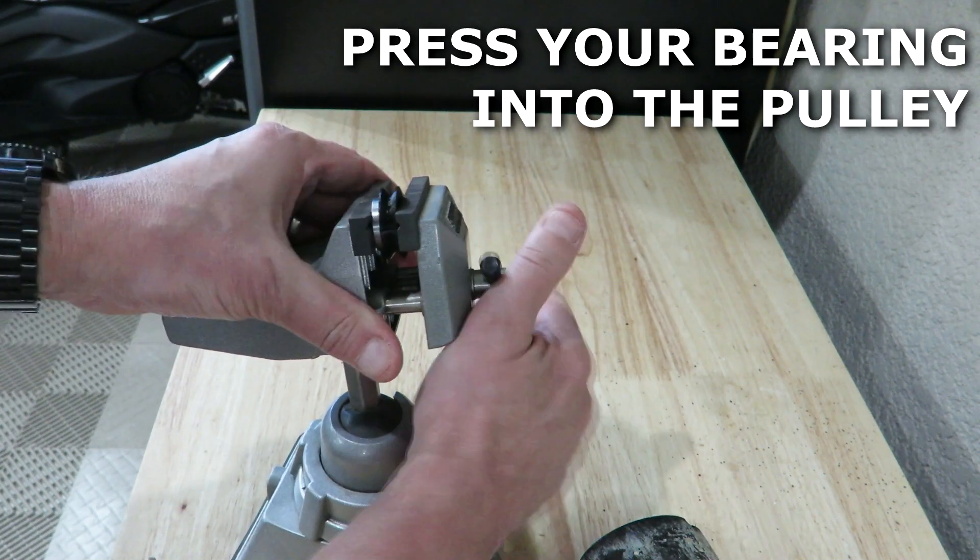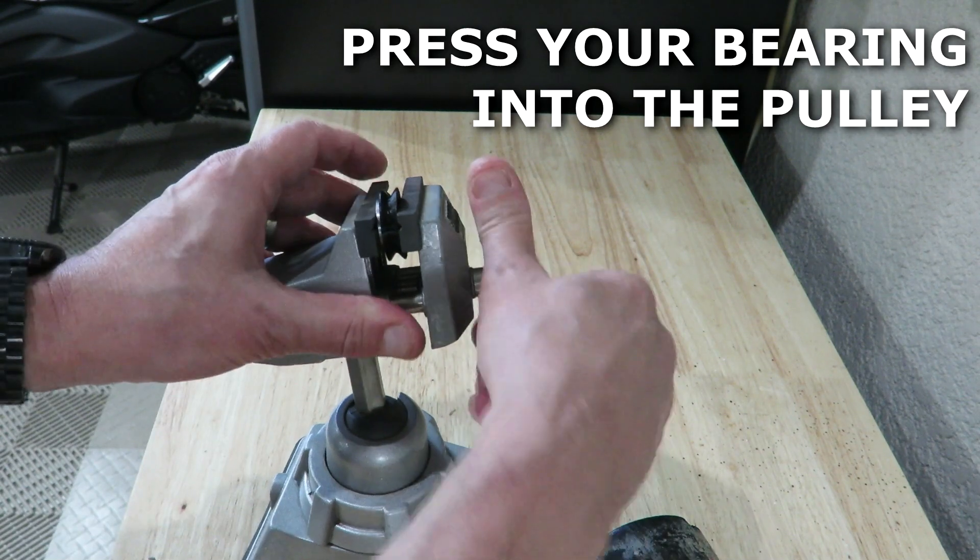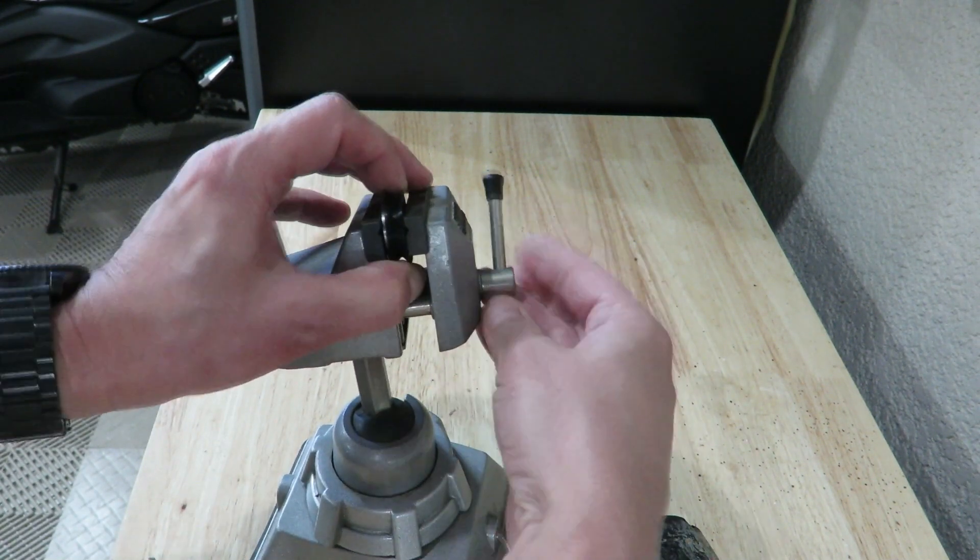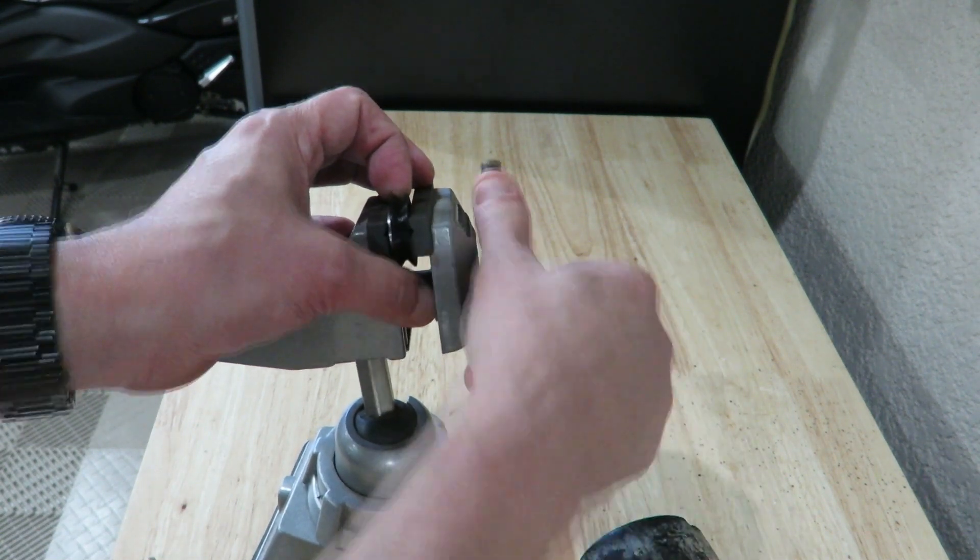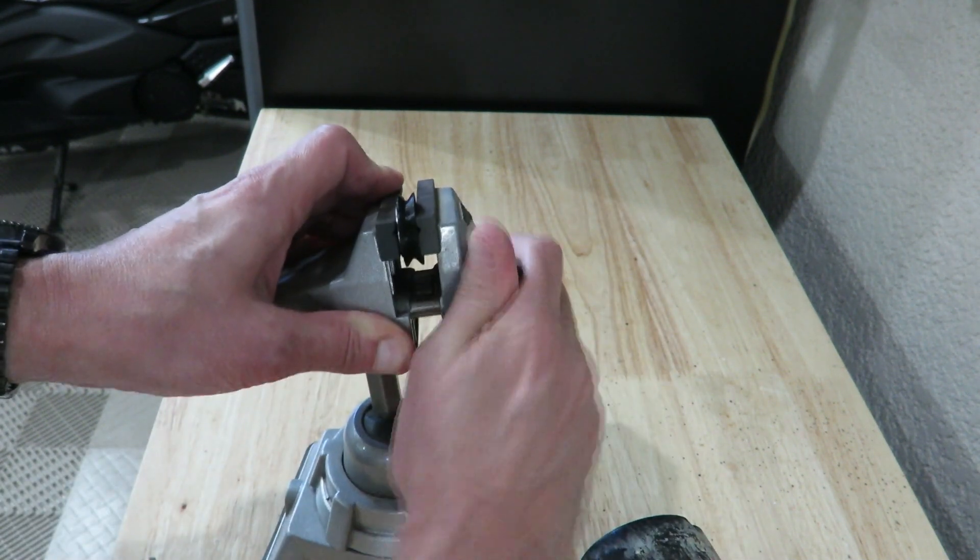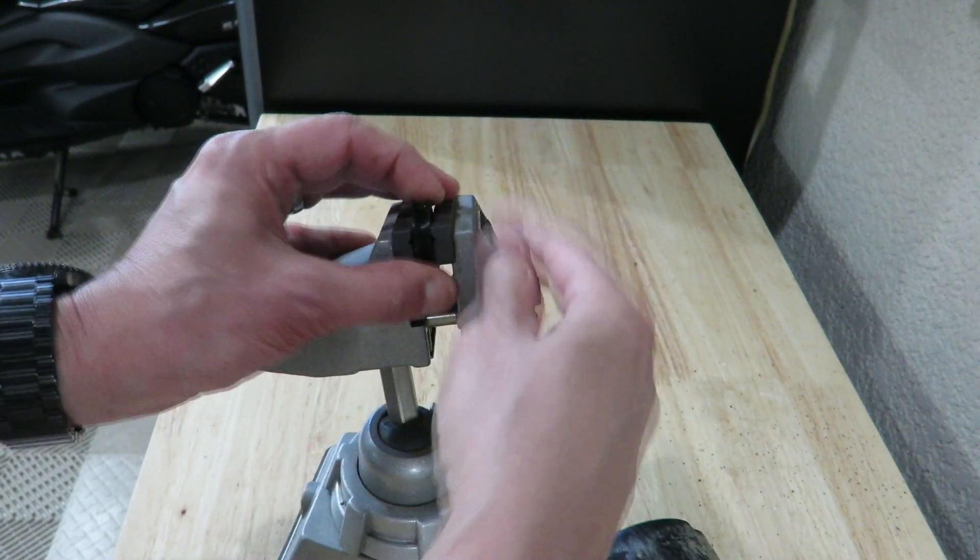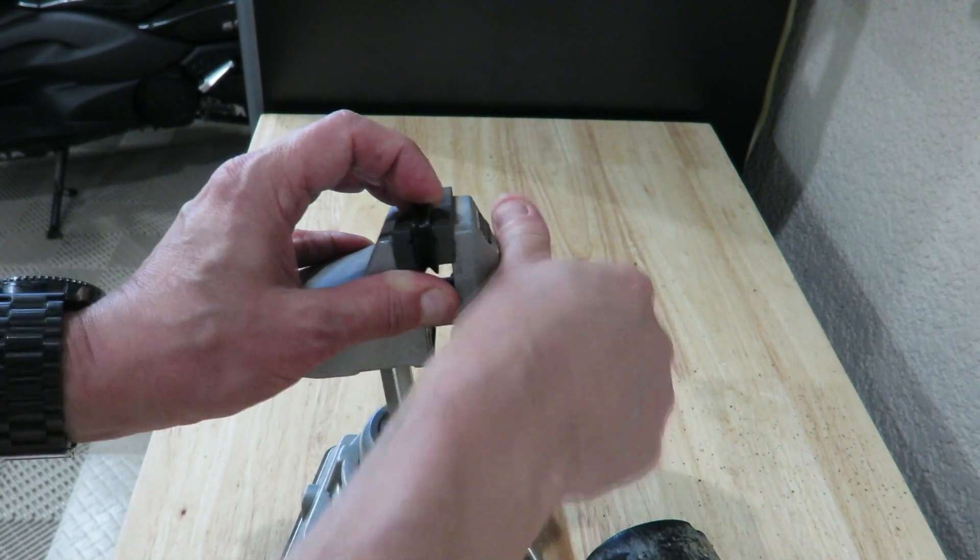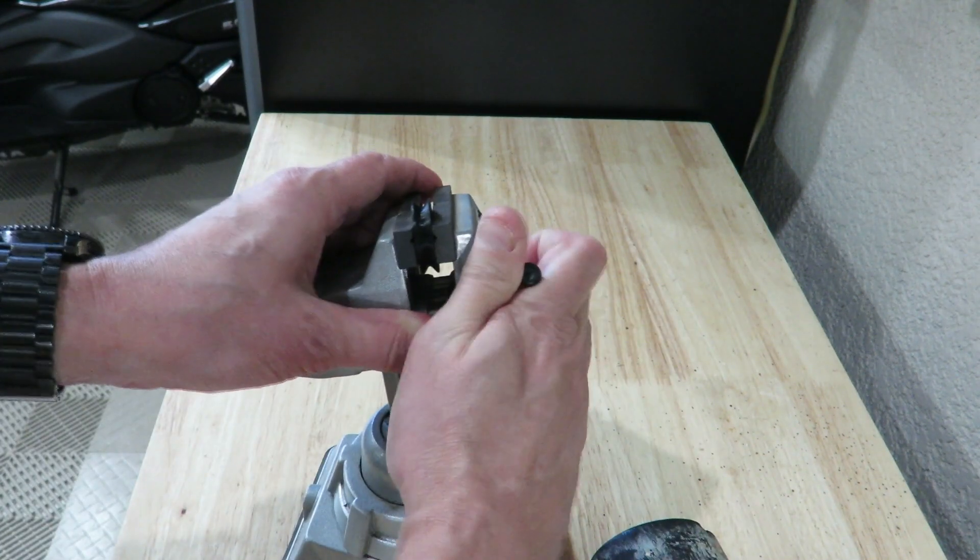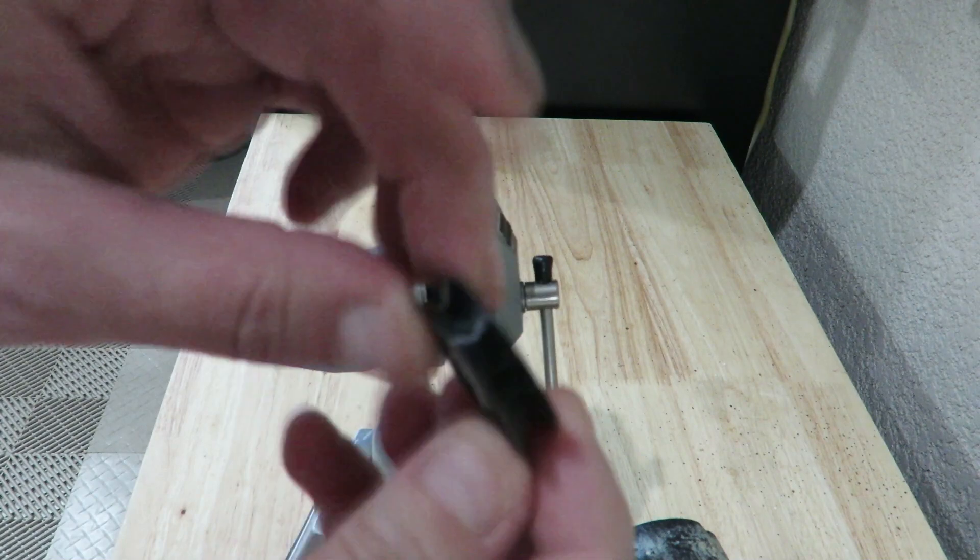And just rotate it. Make sure it's square. I've got this small clamp here. That's why I kind of have to rotate it sometimes. The jaws on this are so slim. And I think we just about got it. There we go. It's on. Nice and smooth.